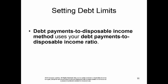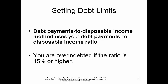The debt payments to disposable income method uses your debt payments to disposable income. Your mortgage interest is not included in this calculation. You're considered over-indebted if your ratio is 15% or higher.